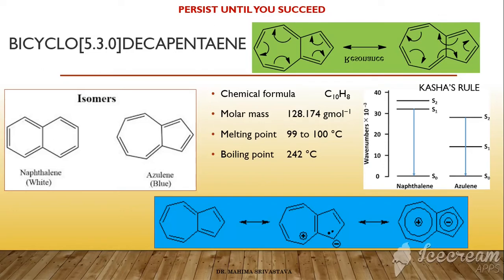As we are considering resonance, without the ionic forms, azulene also shows resonance. This resonance for azulene is depicted in the green box, where the shift of double bonds easily gives two resonating structures, and that is the cause of the good stability of azulene.